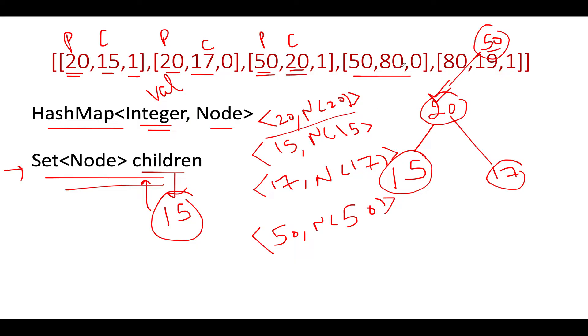Let's proceed ahead. Next we see is 50, 80, and 0. Is 50 part of the hash map? Yes it is part of the hash map, so we'll reuse it. Is 80 part of the hash map? No it's not, so we're gonna create a new node 80. Let's add 80 to the hash map, so it gets added. Along with this, we will fix parent's right to 80 because here it signifies right.